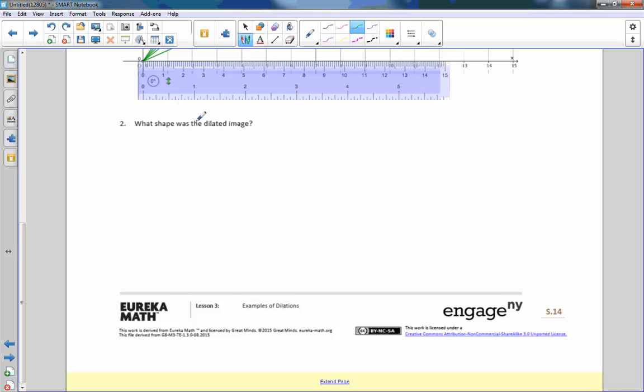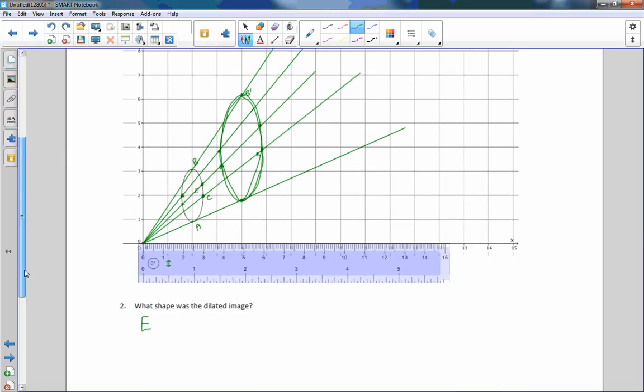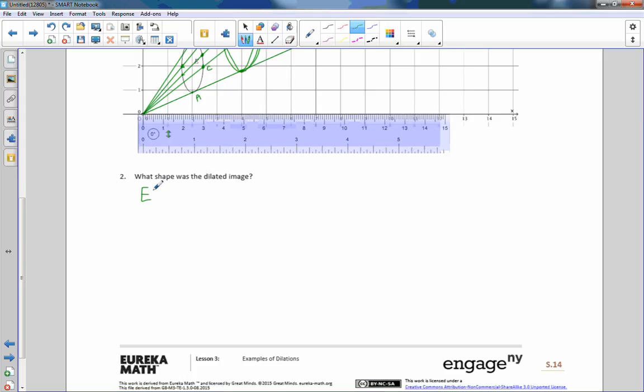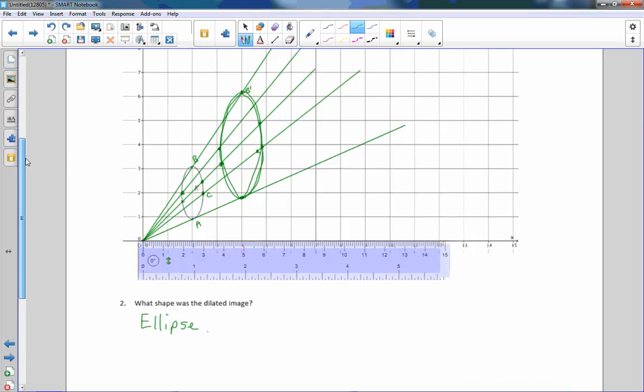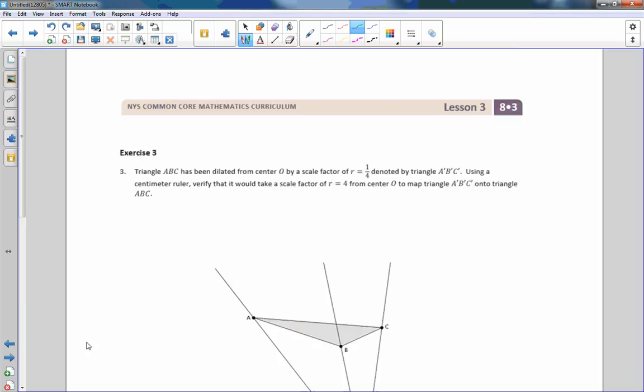So it says, what shape was the dilated image? Well, the image was an ellipse, so the pre-image was an ellipse, so the image will also be an ellipse. The shape does not change in dilations. The size does, but the shape does not.